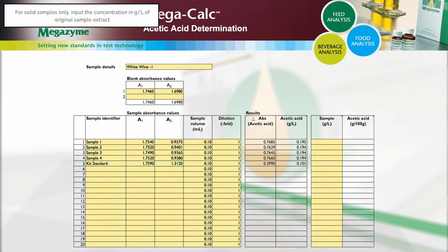For solid samples, input the concentration of the original sample extract in grams per litre. The concentration of acetic acid in the solid samples is then automatically calculated and provided as grams per 100 grams in the original sample.